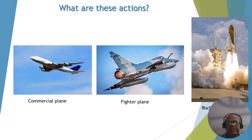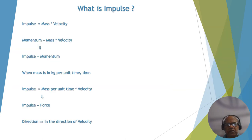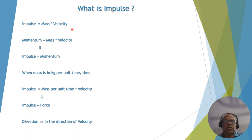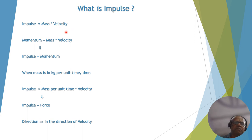Let us understand what is impulse and what is reaction in a turbine. Impulse action is associated with mass and velocity — it is the product of mass and velocity. If mass is more, impulse will be more. If the velocity of the object is more, impulse will be more. If both mass and velocity are more, then certainly impulse will be more.